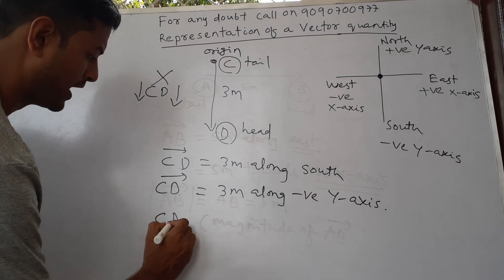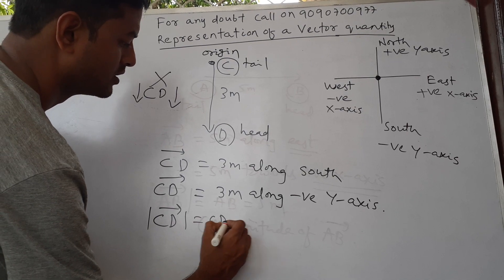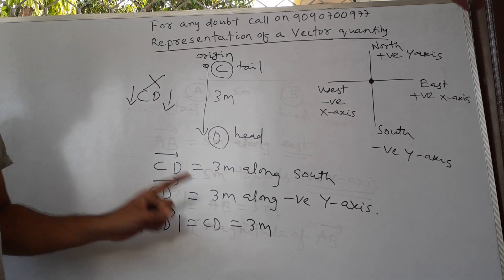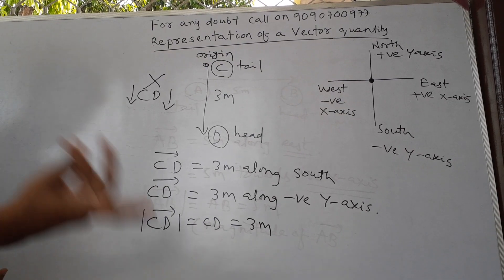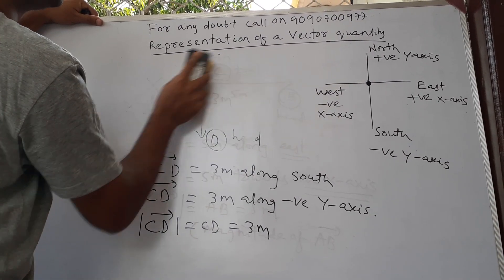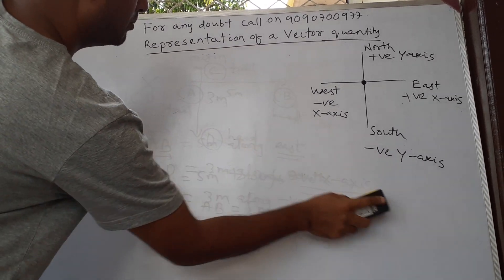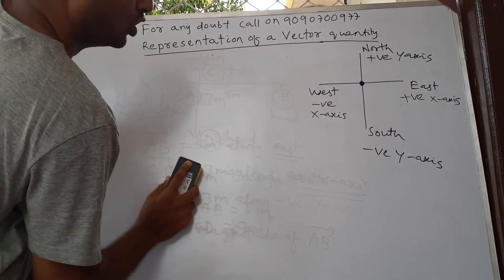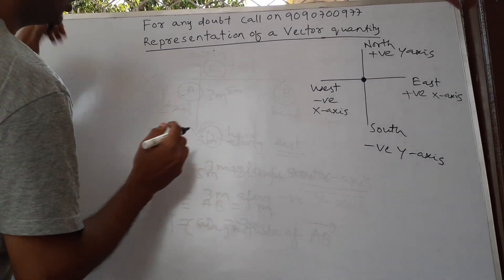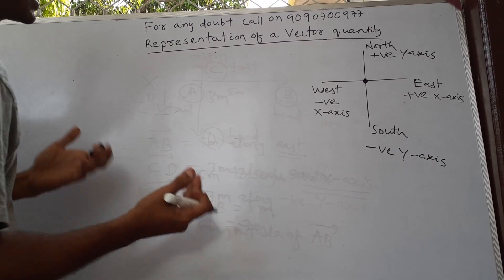The magnitude of vector CD is 3 meters. This represents the magnitude of that vector. Believe me, if you understand physics by drawing diagrams, life will be very easy and you will feel more comfortable solving physics problems — you have to draw diagrams by reading the question.